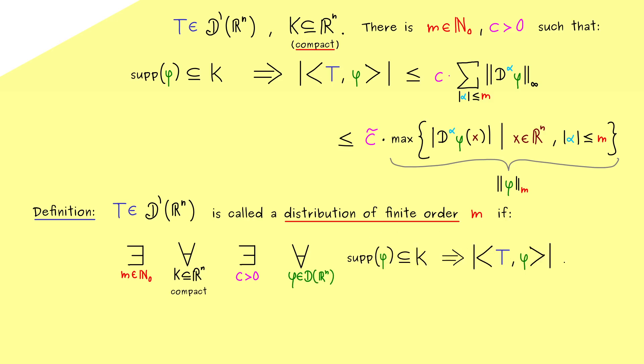The value of the distribution T at the function φ is less or equal than c times the m norm of φ.